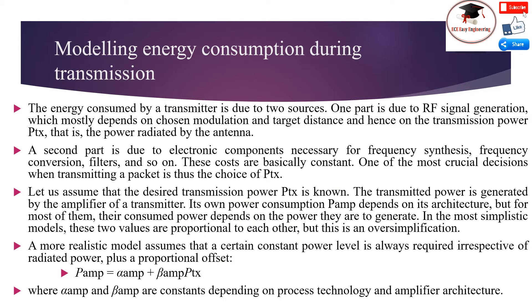Modeling energy consumption during transmission: the energy consumed by a transmitter is due to two sources. One part is due to radio frequency signal generation, which mostly depends on the chosen modulation and target distance, and hence on the transmission power — the power radiated by the antenna, represented by PTX. A second part is due to electronic components necessary for frequency synthesis, frequency conversion, filters, and so on. These costs are basically constant.